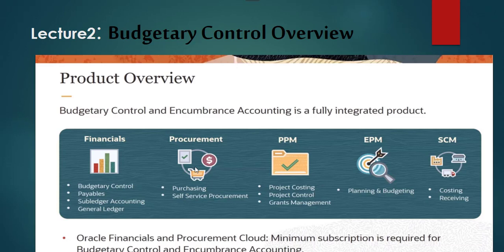Under Procurement, we have purchasing and self-service procurement, where you can find and check your requisitions and purchase orders. Depending on your business requirements, you may also have PPM — Project Portfolio Management Cloud — for transactions with project attributes. For more advanced budget planning needs, you can consider EPM, Enterprise Performance Management, for planning and budgeting cloud.